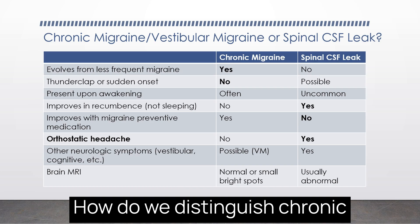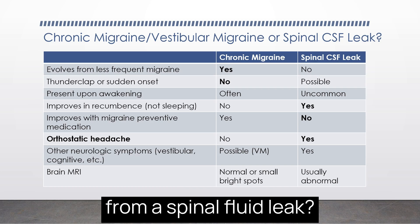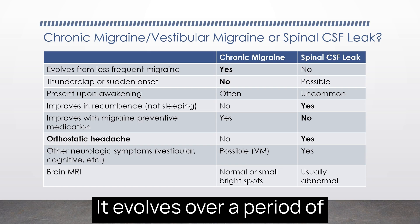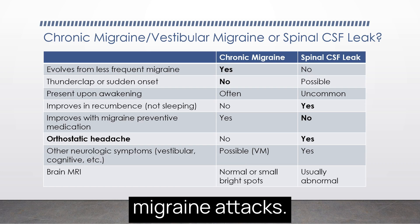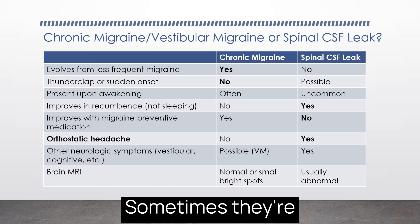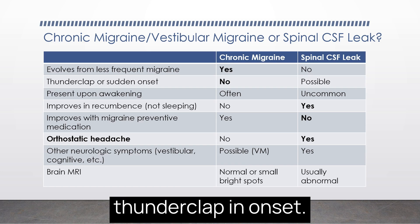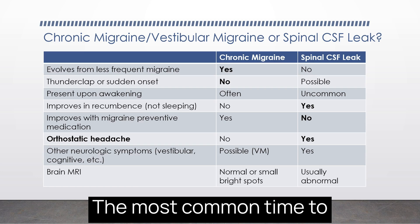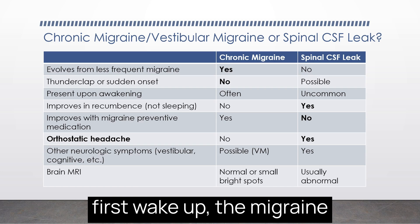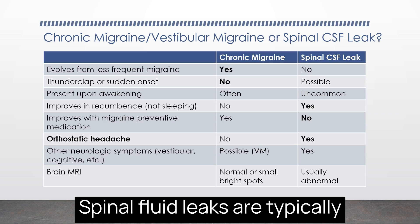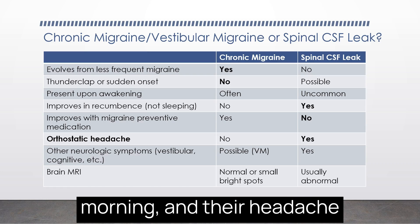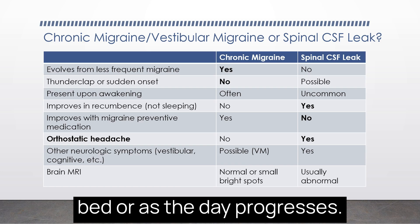How do we distinguish chronic migraine or vestibular migraine from a spinal fluid leak? People with chronic migraine don't wake up one morning with chronic migraine — it evolves over time from less frequent migraine attacks, whereas spinal fluid leaks often start the other way around and can begin very suddenly, sometimes with thunderclap onset. The most common time for a migraine headache is early in the morning, sometimes already present when people first wake up, while spinal fluid leaks are typically the opposite — people feel best when they first wake up, and their headache starts once they're out of bed or as the day progresses.